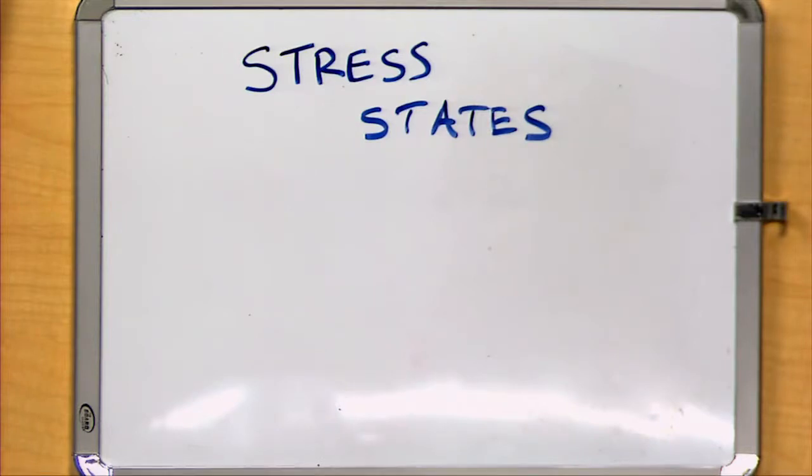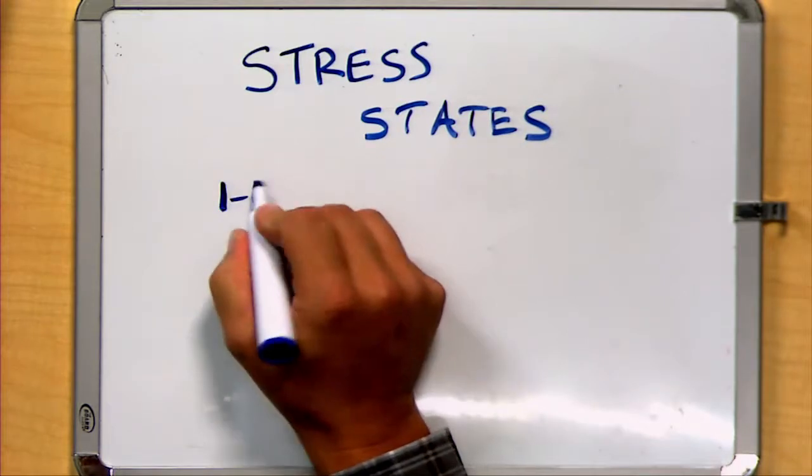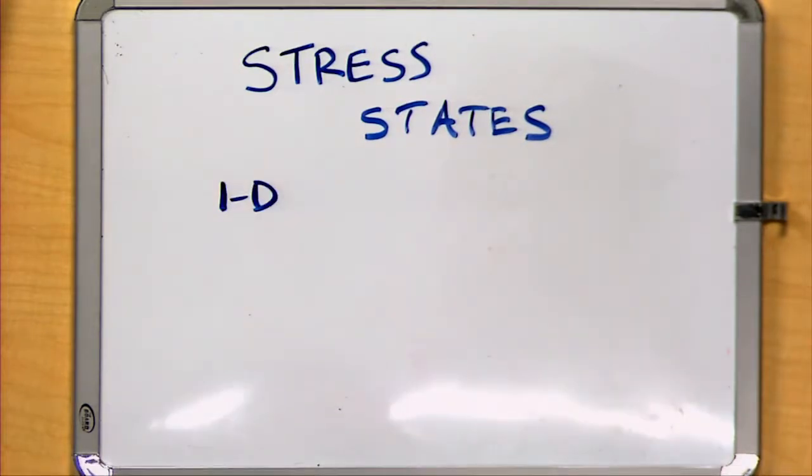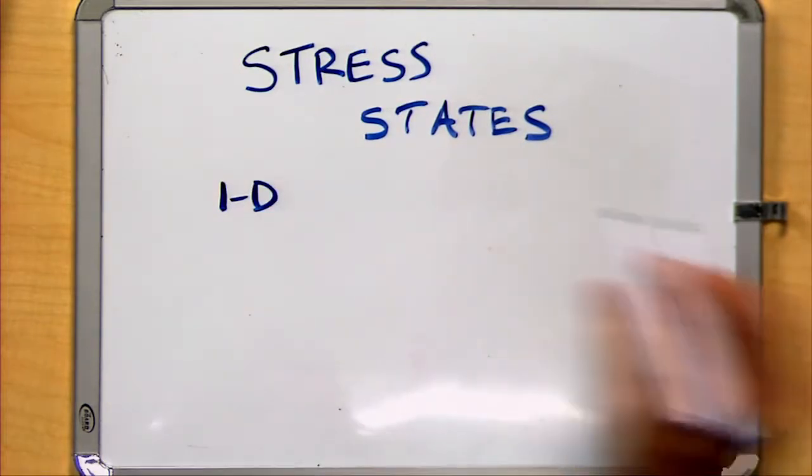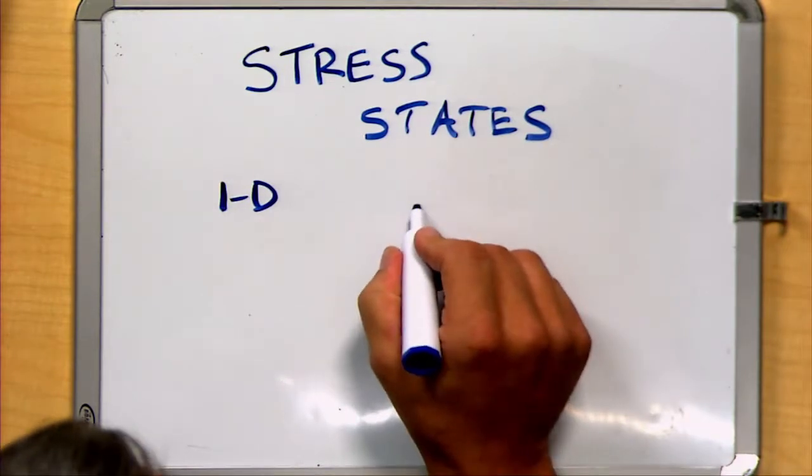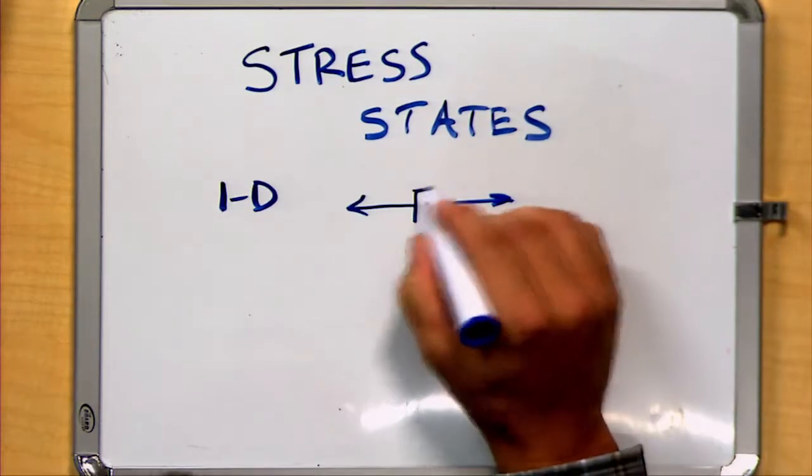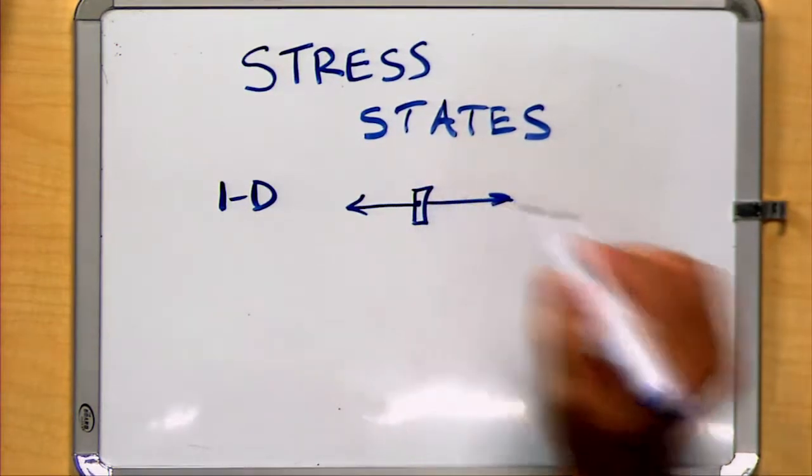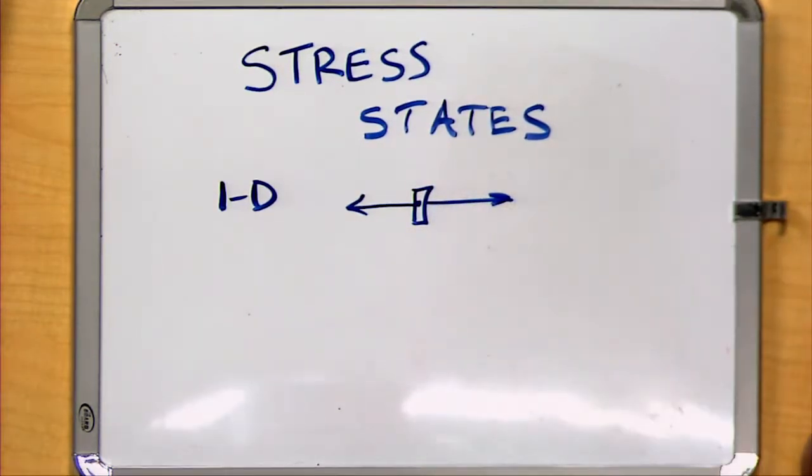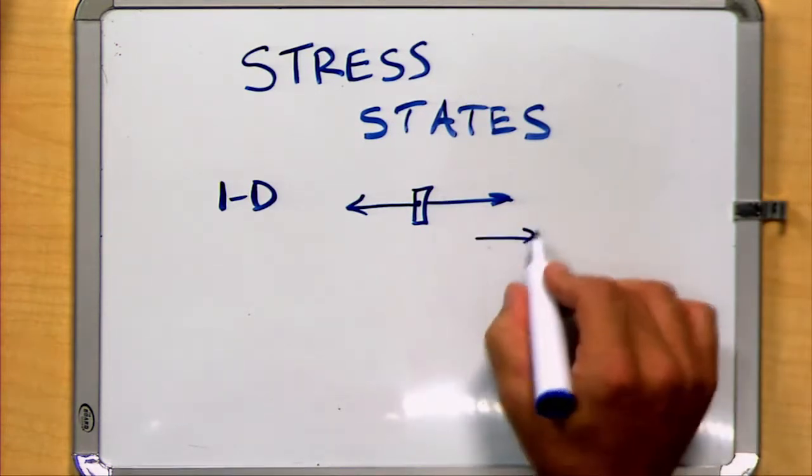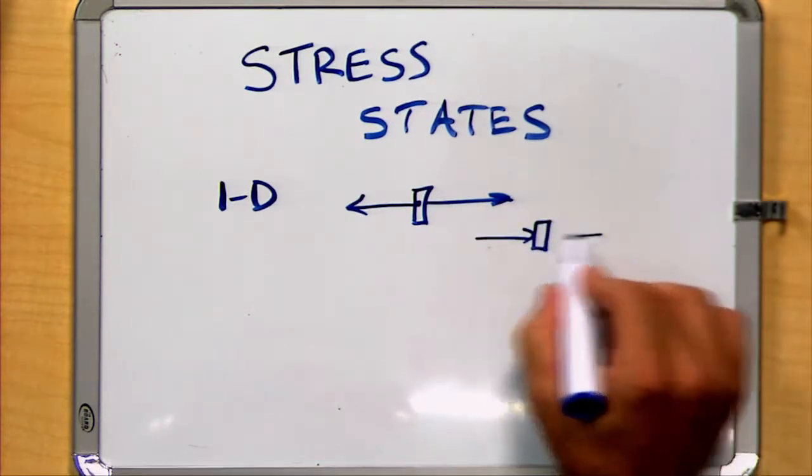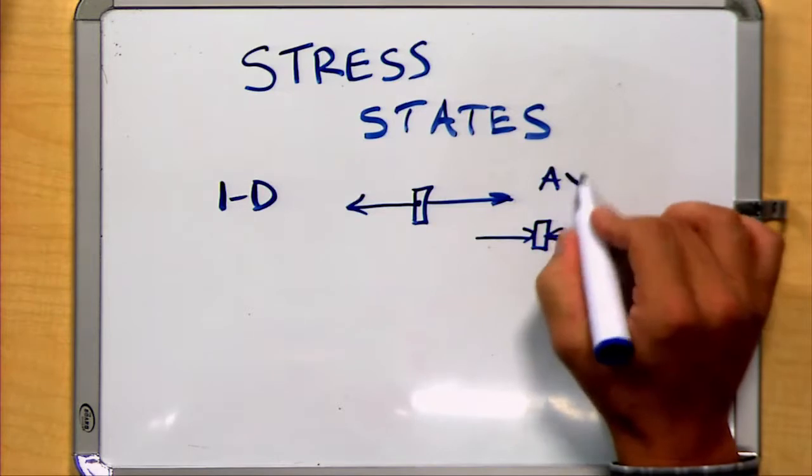Let's talk a little bit today about stress states. We've already talked about one dimension. One dimension limits the force combinations that we can possibly have. For example, if I apply a force pair, and our stress is in terms of a force pair in one dimension, I pretty much have tension or compression, what we called axial stress.